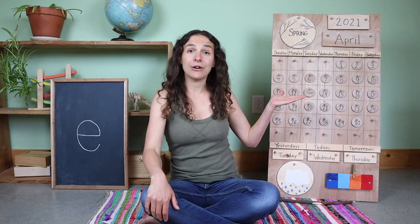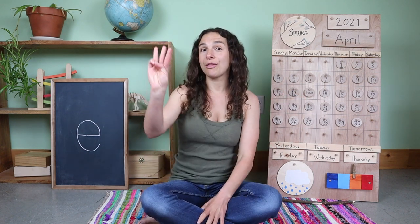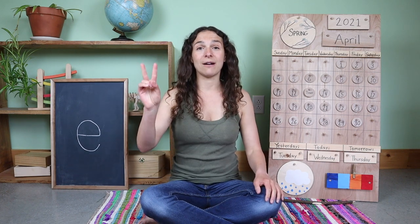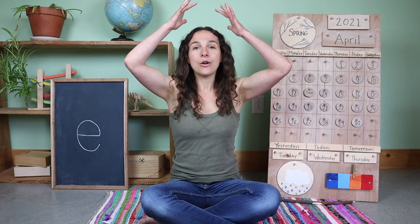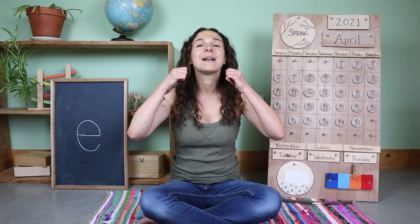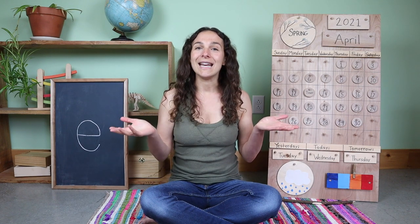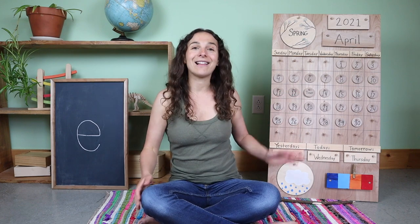Before we get started with our calendar and weather chart, there are three things that we have to do. First, let's turn on our listening ears. The second thing is to put on our thinking hats — can you find yours? My thinking hat is right here. Today I'm going to tie a bow to fasten my thinking hat. And the third and final thing is to warm up our hearts. Boom boom. Boom boom. And now we can move on to the calendar and weather chart.